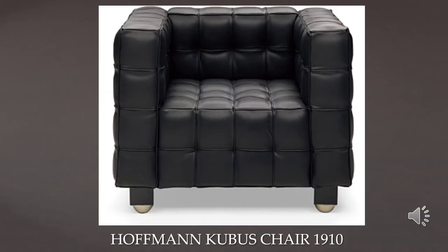The Cubist chair by Hoffmann is considered a modern classic — he really anticipated Modernism with this piece. It's a perfect example of his strict quadratic themes; he was nicknamed 'Square Hoffmann' because he used cubes and squares so often. It was designed to be displayed at an international exhibition in Argentina and also inspired later Modernists such as Le Corbusier, whom we'll study next week.